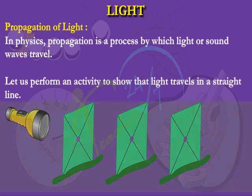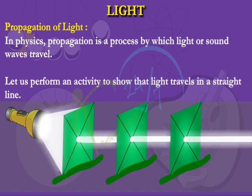Dim the lights in the room and shine the flashlight through the holes. You can see the light from the hole in the third index card.